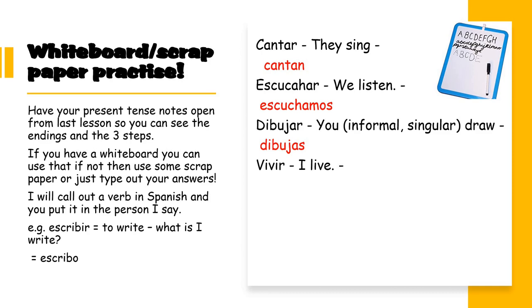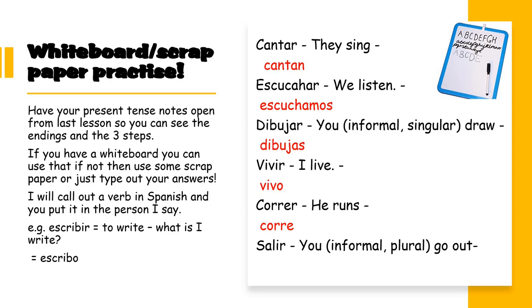Moving on now from AR verbs. AR verbs are more common than any other - there are a lot more AR verbs, so those are the endings you need to know best. So vivir is to live - how would you say 'I live'? Pause and write it down. So vivir is what we should have. And then correr, to run - how would I say 'he runs'? Pause and write it down - hopefully you have written corre. Salir, the final one, means to go out. If you're talking to a group of people that you know, how would you say 'you go out'? Pause and write it down - and hopefully you've written salís, remember the accent.